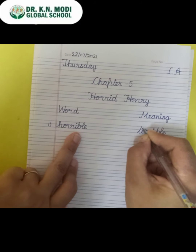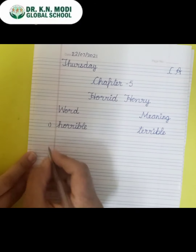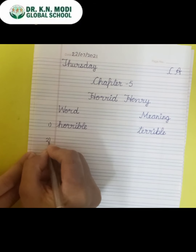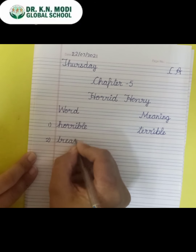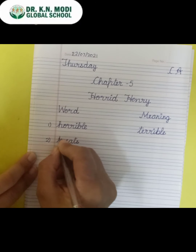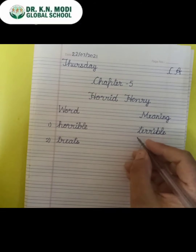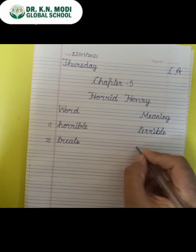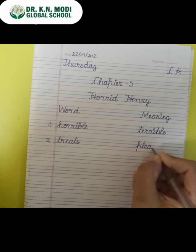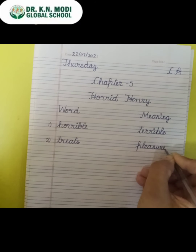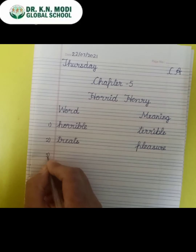Write it down here: T-E-double R-I-B-L-E — terrible. Now the second word is T-R-E-A-T-S — treats. What is the meaning of treats? It means pleasure — P-L-E-A-S-U-R-E — pleasure.